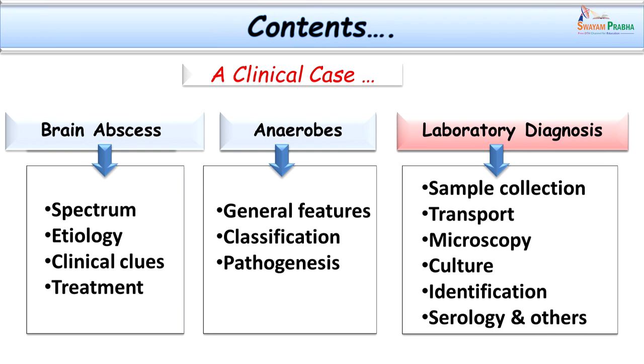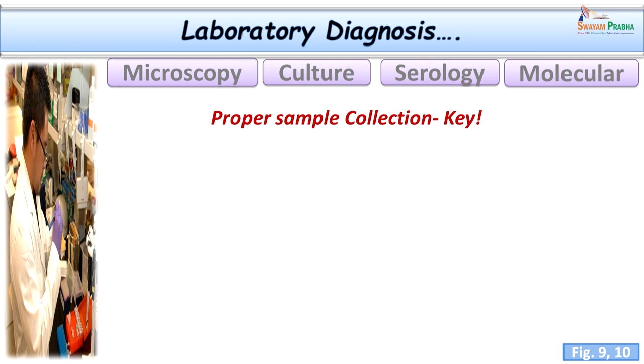Let us now move into laboratory diagnosis, which is important to initiate prompt and specific therapy. A key factor in anaerobic infection is sample collection. Collection is the crucial point — if we collect the sample in the wrong way, we may end up either not growing the anaerobes or growing wrong organisms. Proper sample collection is key. Any anaerobic isolate cannot be tagged to the etiology unless our collection is proper, as the organism might have just grown as a bystander.